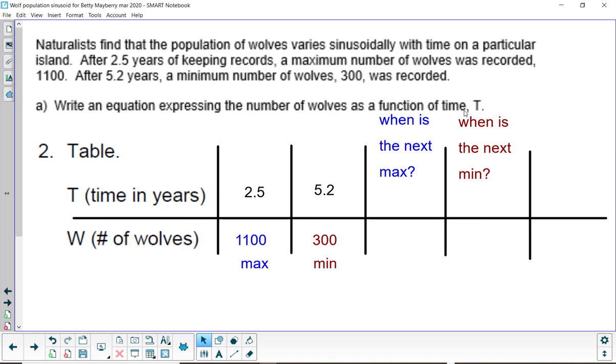When is the next maximum? Well, if you take 5.2 minus 2.5, that's 2.7 years after 5.2. So, if I add that along there, it'll go max, min, max, min. This is going to happen at 7.9 years. And that means it should be 1,100 wolves maximum. When is the next minimum? Again, 2.7 years after that should be the next minimum. And so, the ordered pair should be 10.6, 300.